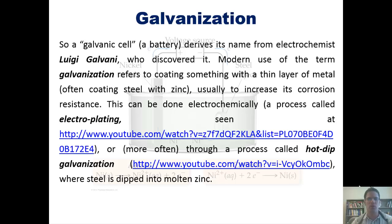Modern use of the term galvanization refers then to coating something with a thin layer of metal, often coating steel with zinc, usually to increase its corrosion resistance. This can be done electrochemically, a process called electroplating, which is shown here at this YouTube video. Or more often through a process called hot dip galvanization, where steel is dipped into molten zinc, shown at this YouTube video. I'm going to post links here to both of these videos, which I invite you, my students, both those who are actually in my class life, and those who are out there in the wonderful world abroad, to watch these videos, because both of them are very, very cool. One of them in particular is highly entertaining, not only because it's interesting, but also because all of the people on it have very exciting Australian or New Zealander accents. I honestly don't know if I'm cultured enough to be able to distinguish between the two.